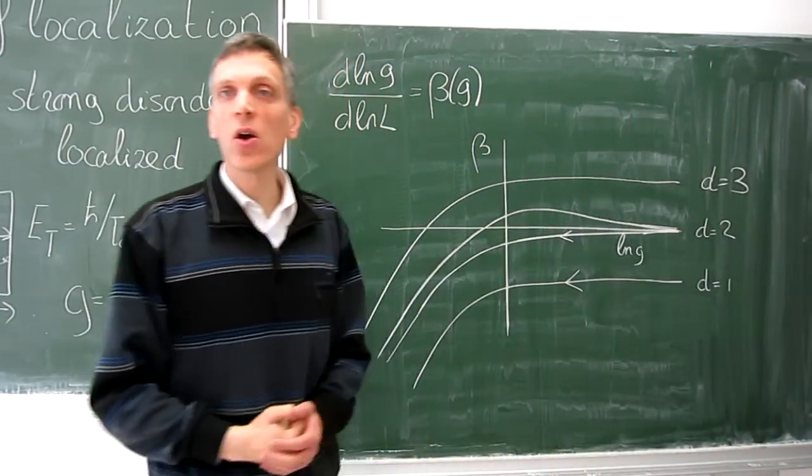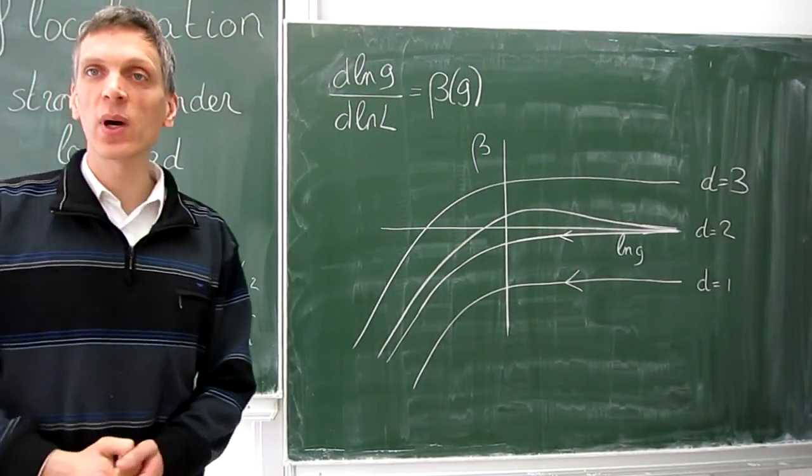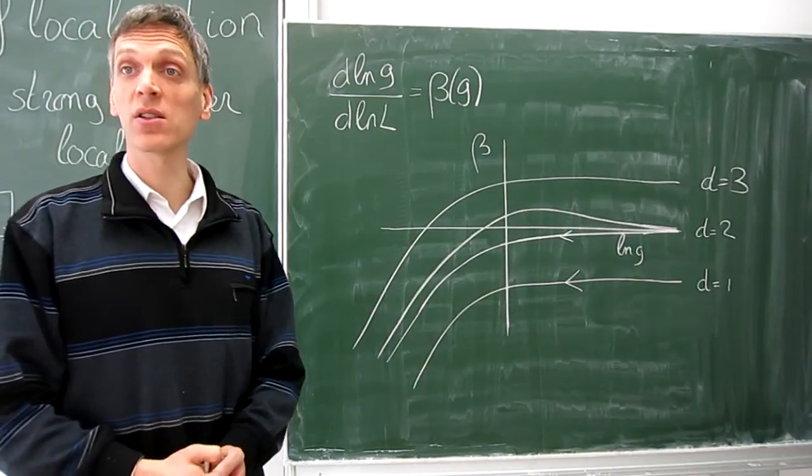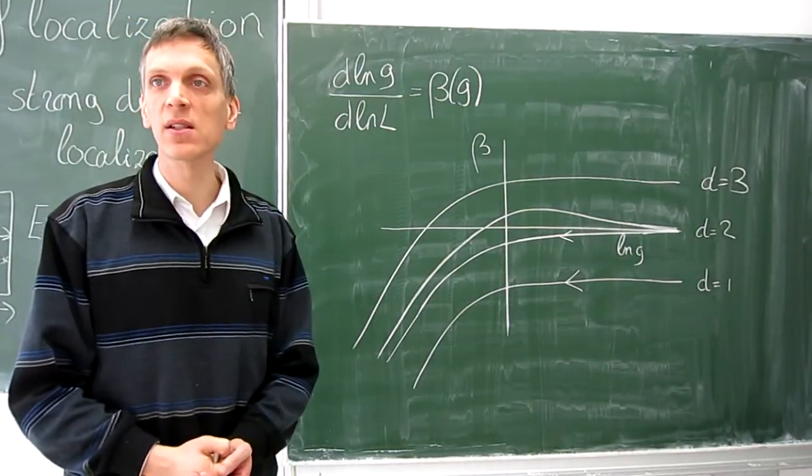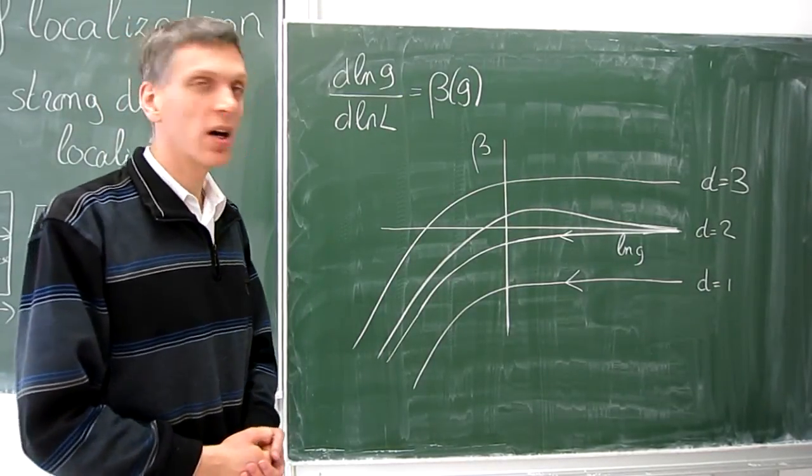On the other hand, in three dimensions, as well as in two dimensions for the symplectic class, both the metallic phases and the localized phase are stable.